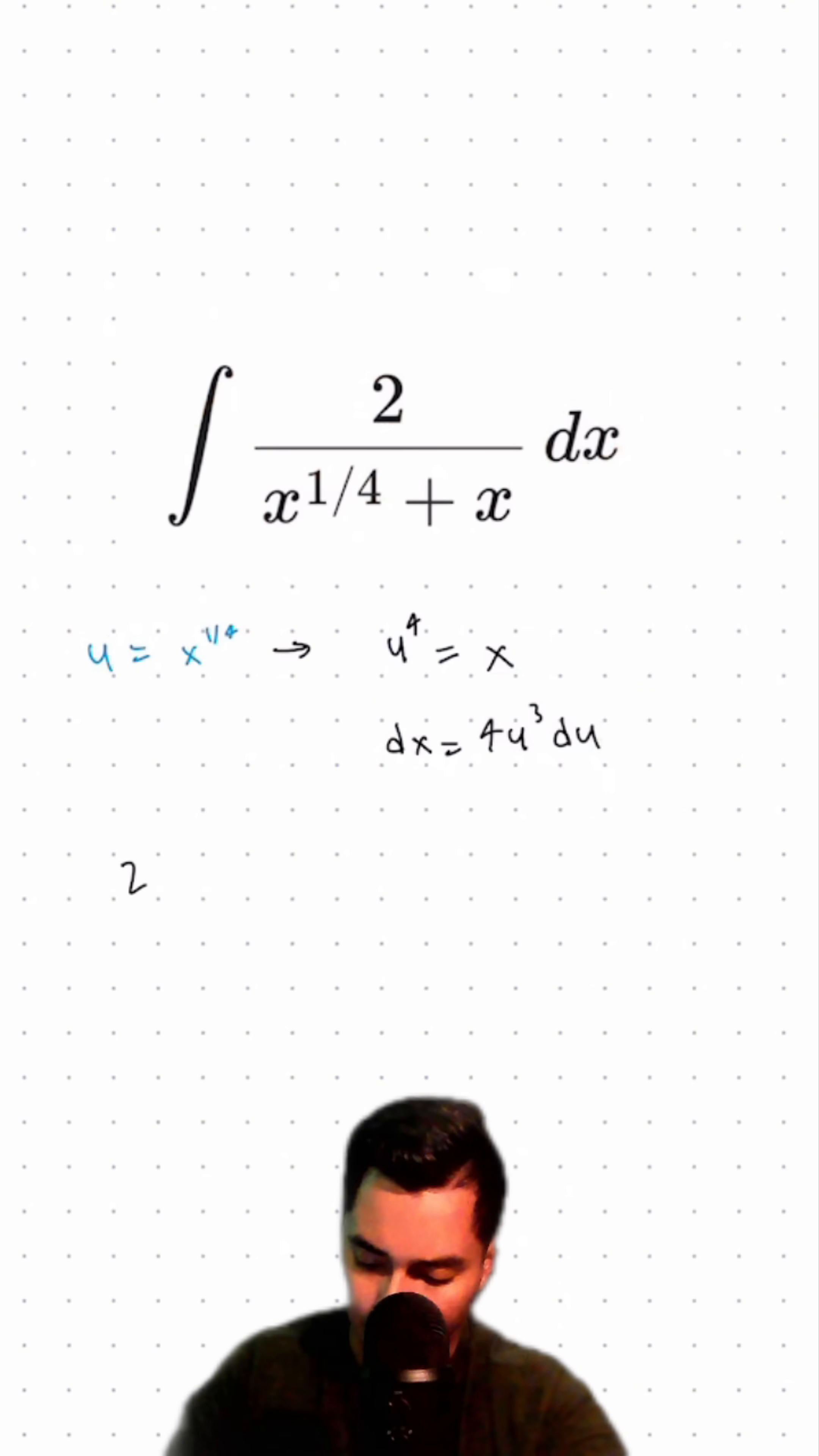Rewriting this, we're going to pull out the 2 outside the integral. Our dx can now be rewritten as 4u cubed du over x to the 1/4 plus x, which will be u to the 4/4 plus u to the 4.